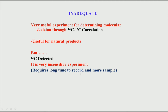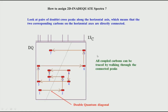Therefore INADEQUATE is a very insensitive experiment — it requires very long time to record and more sample. As we saw earlier in the theory part, the sensitivity of NMR is proportional to the square root of measurement time and directly proportional to concentration. So you either need a long time or more sample, or both. INADEQUATE falls under this category of demanding experiments.